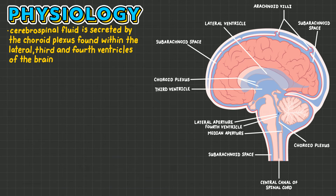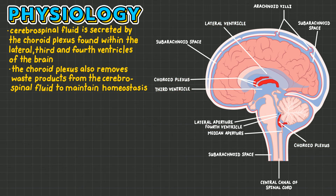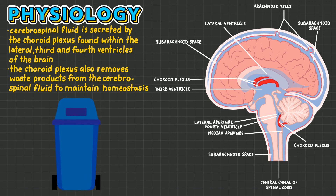Cerebrospinal fluid is secreted by the choroid plexus, which can be found within the lateral, third, and fourth ventricles of the brain. The choroid plexus is also responsible for the removal of waste products to maintain homeostasis within the central nervous system.